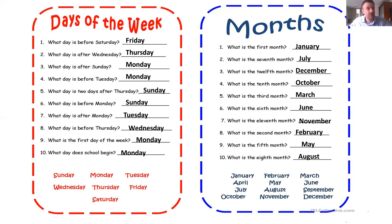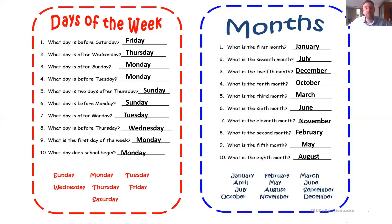What is the first month? January. What is the seventh month? July. What is the twelfth month? December — be careful with your tongue and your two front teeth: the seventh month. Don't forget. What is the twelfth month? Not easy — December. What is the tenth month? October. What is the third month? March. What is the sixth month? June. What is the eleventh month? November. What is the fifth month? May. What is the eighth month? August.